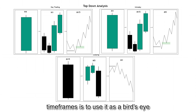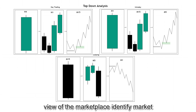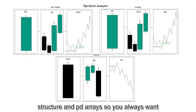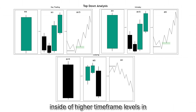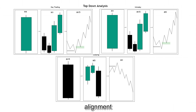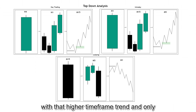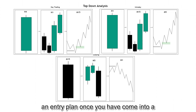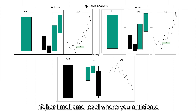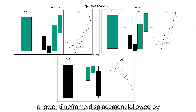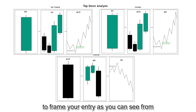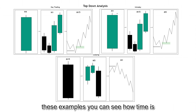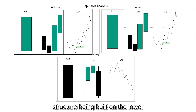The general gist of the higher timeframes is to use them as a bird's eye view of the marketplace — identify market structure and PD arrays. You always want to be aligning yourself with the higher timeframe trend, as well as taking trades inside higher timeframe levels in alignment with that trend. Only come down to the lower timeframes to frame an entry plan once you have come into a higher timeframe level. Time is fractal — a one-hour candlestick is simply structure being built on the lower timeframes.